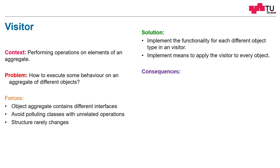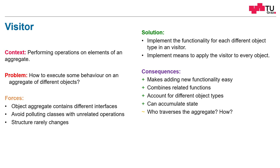So what are the consequences now? Adding new functionality is easy now. We don't have to change the original objects. We can just create a new visitor and apply it to all objects. Perfect. A visitor combines related functions. If we want to calculate the height, this is not a function which is distributed over all our objects anymore, but it's combined in one visitor. We can account for different object types. So the visitor automatically decides which method should be called. We can accumulate state. A visitor can remember state between calls.